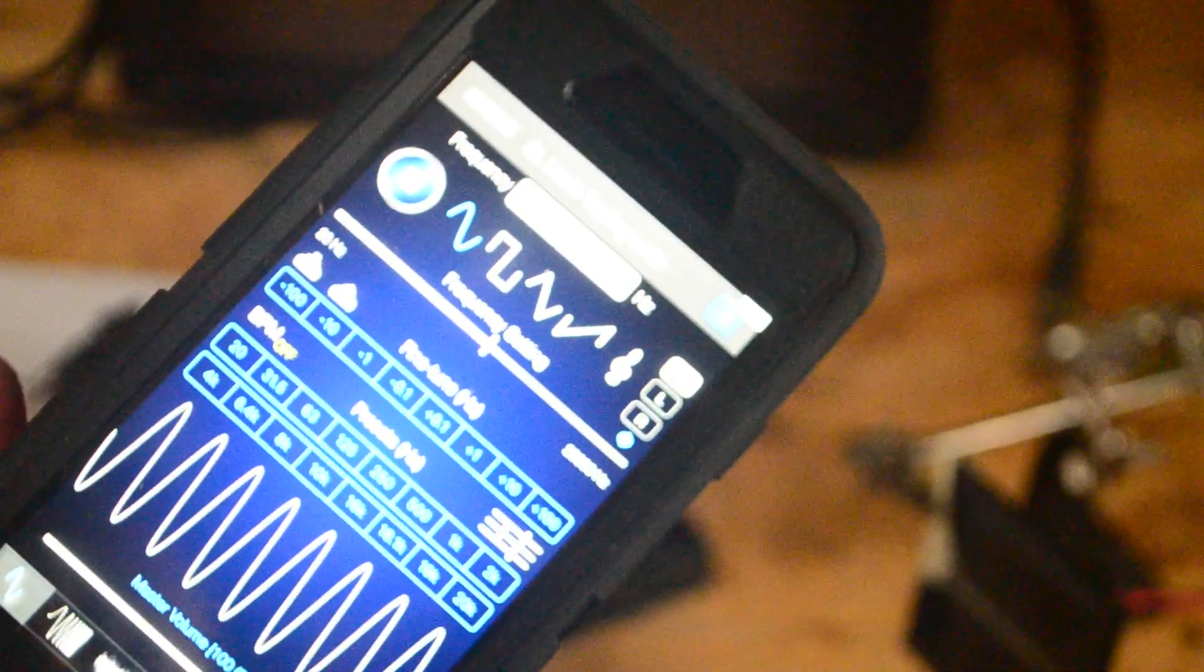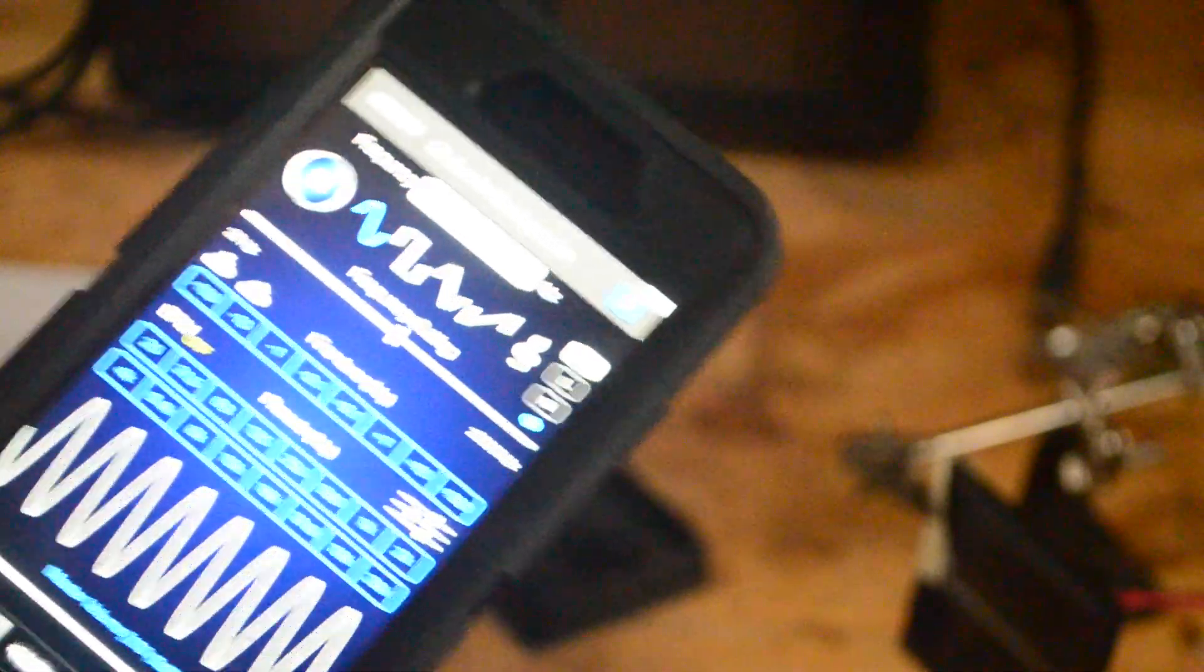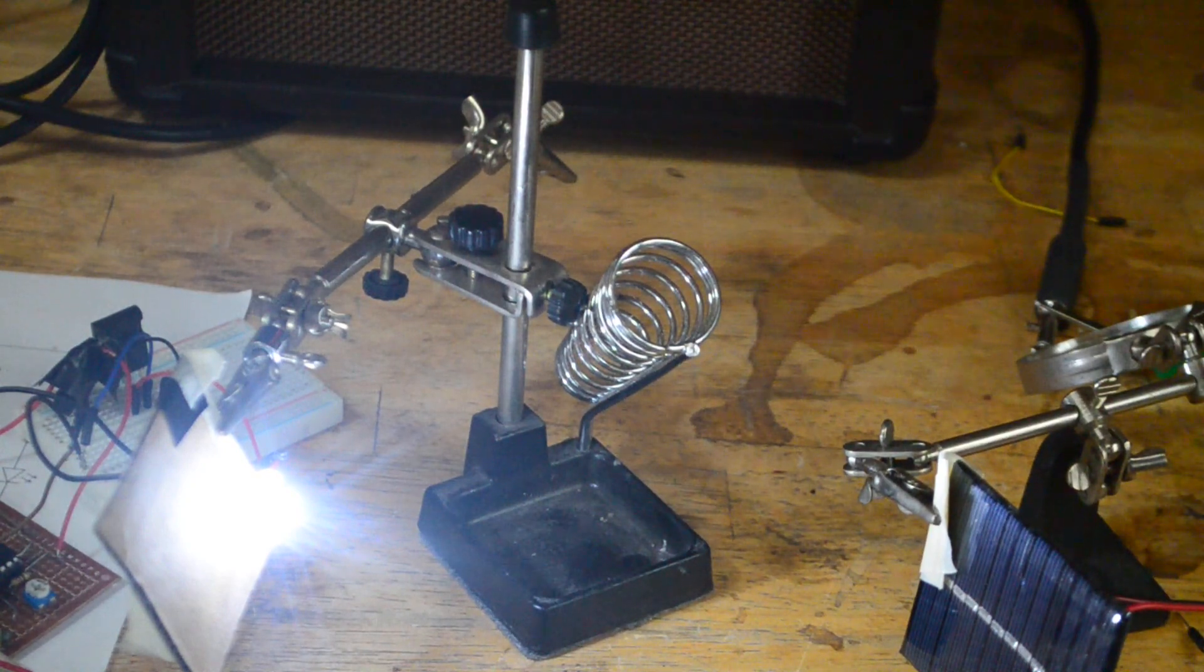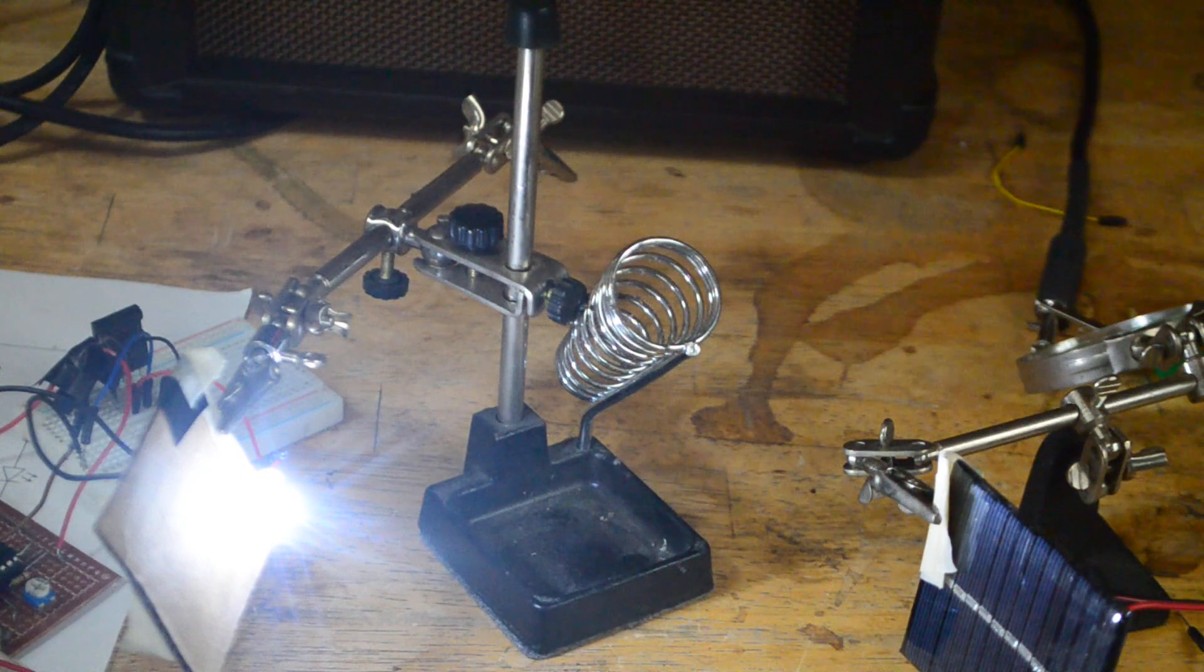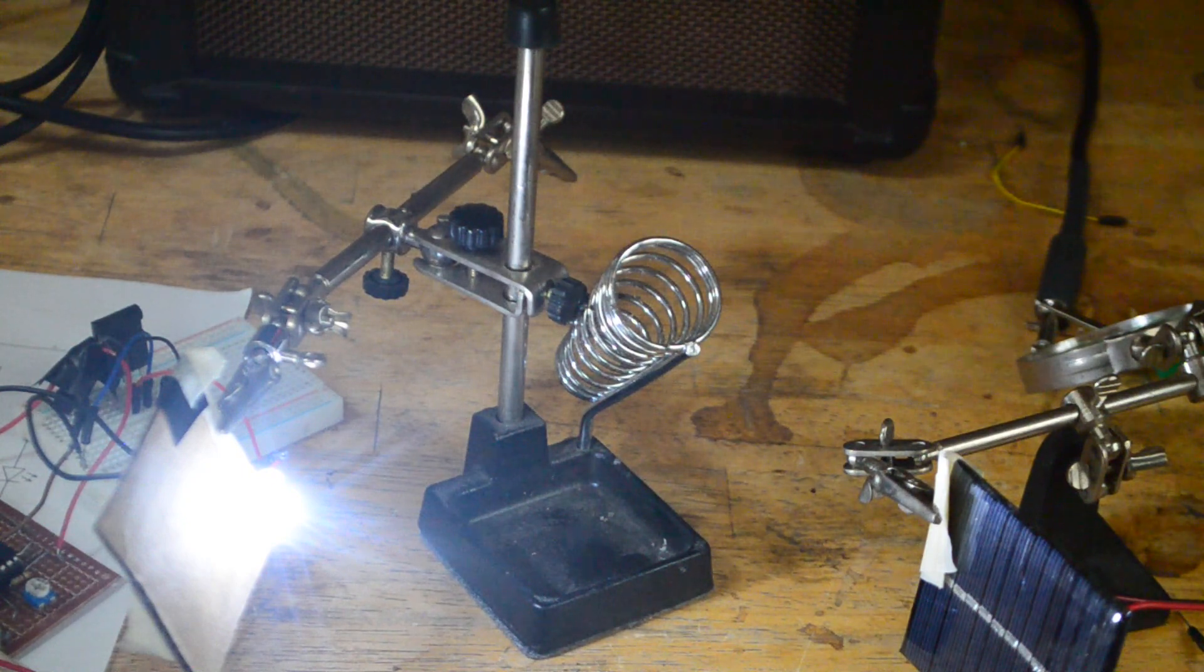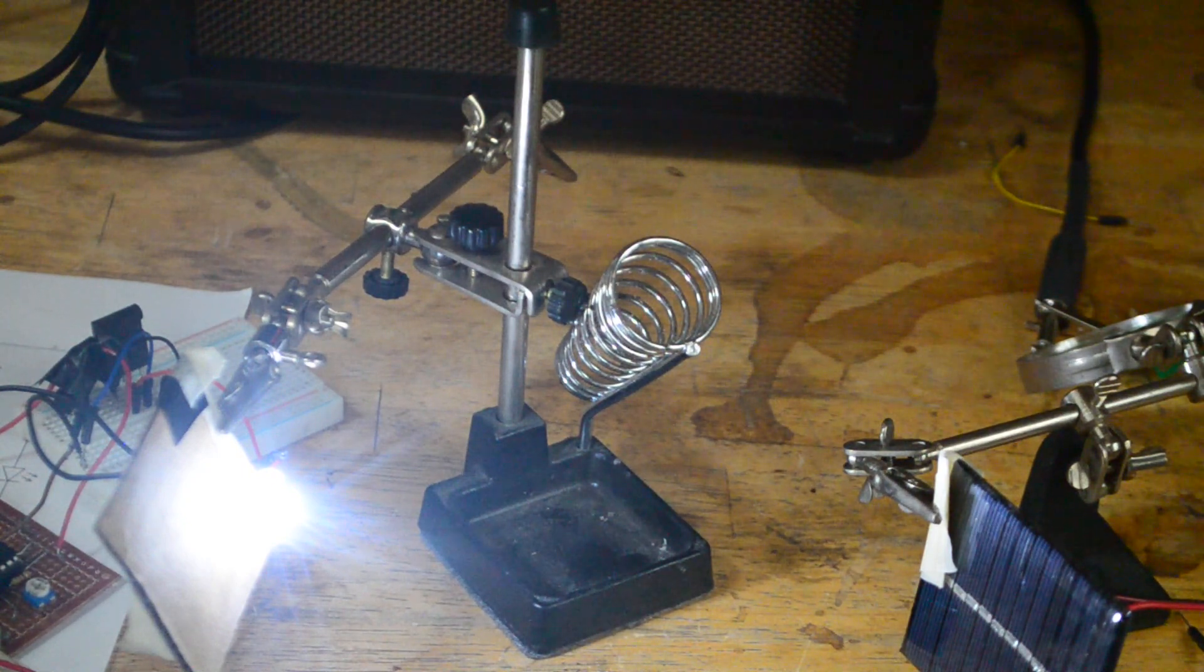For this first test I'm going to be using this frequency generator app I have on my phone so that I can easily distinguish if that frequency is being played. Now the light is going through let me go ahead and hit play on my frequency generator. As you can hear that high pitch frequency is being sent through. And as I modulate that frequency you can hear outputs on the speaker.